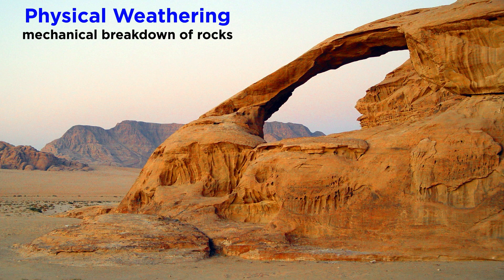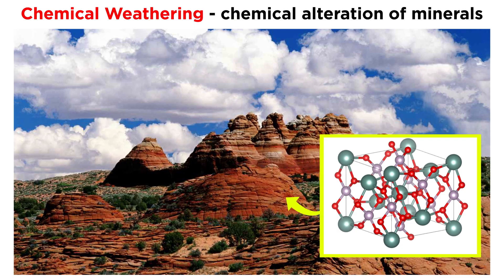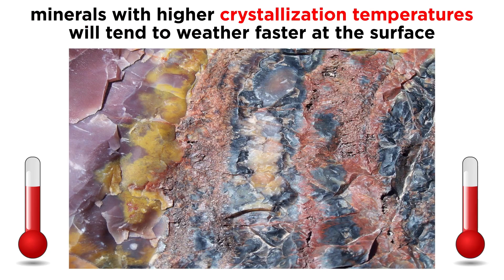In the previous tutorial we learned about physical weathering, which breaks down rock via mechanical processes. So now let's move on to chemical weathering. Chemical weathering is the collection of processes that cause changes to rocks and minerals on the molecular level. As a general rule of thumb, minerals with higher crystallization temperatures tend to weather faster at the surface.